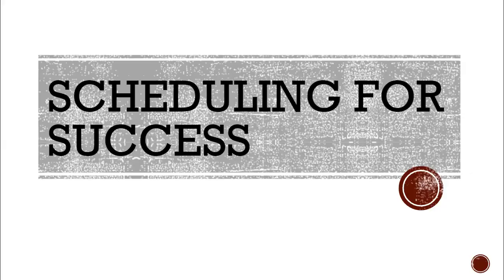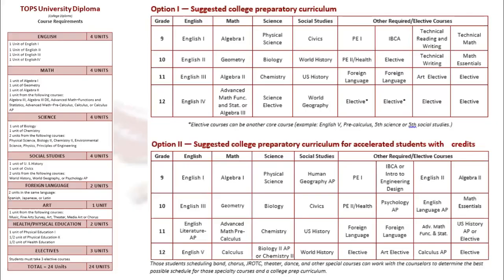This video will take you through the TOPS University Diploma Track and walk students through choosing their eight courses for next school year. While it is important to know which courses you must take in order to fulfill graduation requirements, it's much more helpful to know when you should take each course.